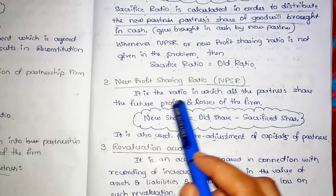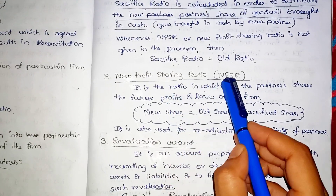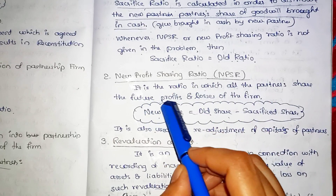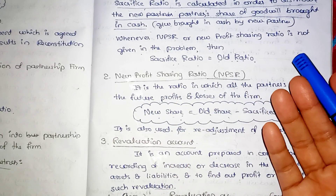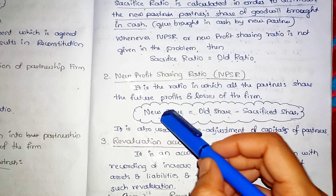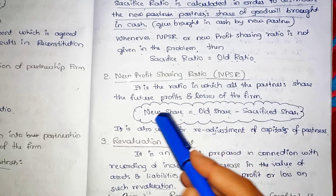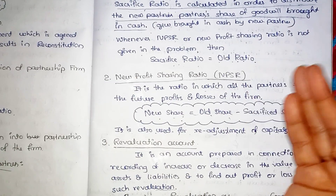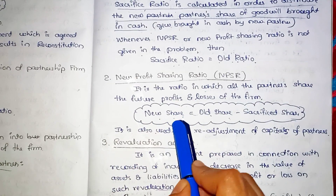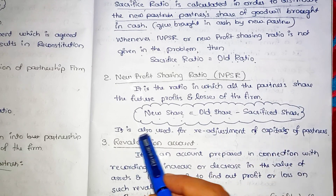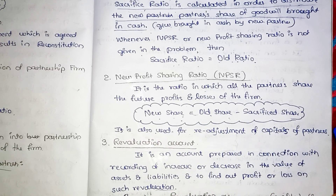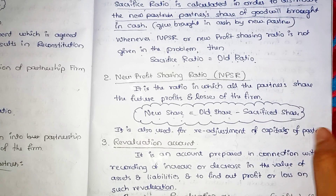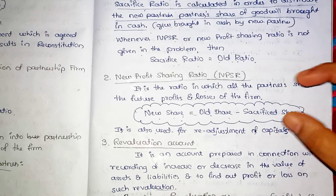Next is New Profit Sharing Ratio, or NPSR. This is the ratio in which all the partners share the future profits and losses of the firm. New Share is equal to Old Share minus Sacrifice Share. It is also used for re-adjustment of capitals of partners - capital re-adjustment.